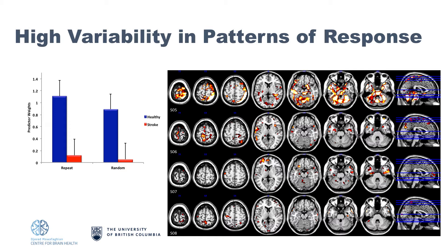Healthy age-matched controls showed a much more similar pattern of brain change. It seems that brain damage — even when similar — makes people employ massive patterns of variability, making it quite difficult to understand who is going to be best for which therapy and when to give it. That's the problem we're really trying hard to solve right now.